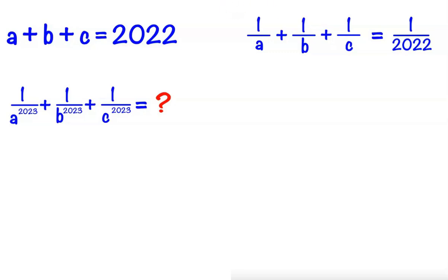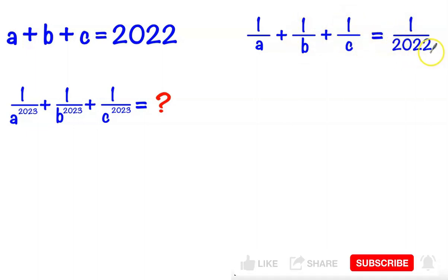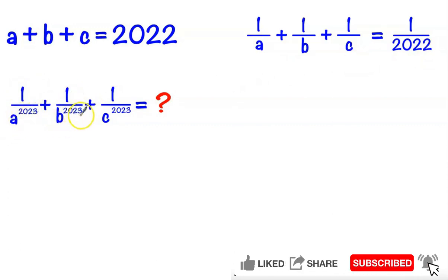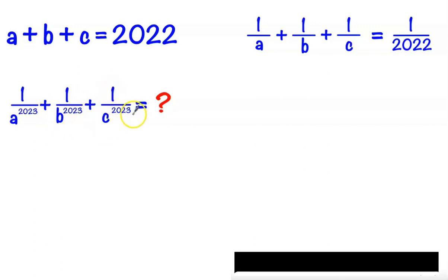Hi all, it's a math olympiad from Vietnam today. Given that a + b + c = 2022 and 1/a + 1/b + 1/c = 1/2022, we need to find 1/a^2023 + 1/b^2023 + 1/c^2023.